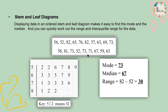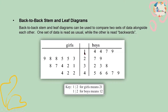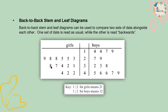A back-to-back stem and leaf diagram is different from a regular one. A regular stem and leaf diagram is one-sided, but a back-to-back diagram has two sides. For example, stem 2 with leaf 7 means 27, and stem 2 with leaf 3 means 23. Back-to-back stem and leaf diagrams can be used to compare two sets of data alongside each other — one set is read as usual while the other is read backwards, so 3|1 means 31 and 3|2 means 32.